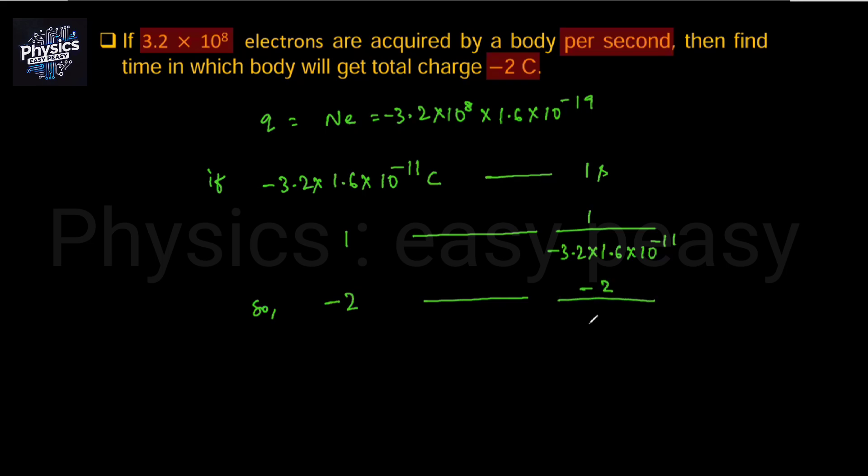Minus 2 divided by minus 3.2×1.6×10^-11. If we solve it, we get 0.39×10^11 seconds. Now we convert it into years.